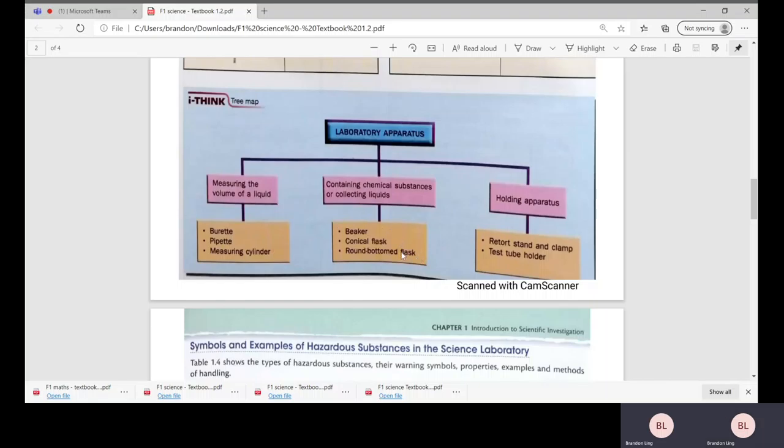Beaker, conical flask, round bottom flask, and lastly we have the retort stand and clamp, and also the test tube holder.